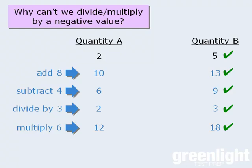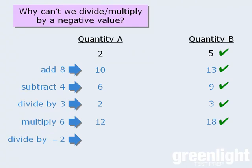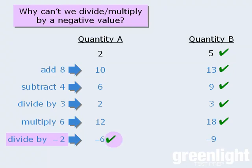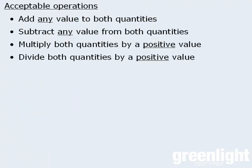However, notice what happens if we take our current quantities and divide both of them by a negative value. When we divide both quantities by negative 2, we get negative 6 and negative 9. And now it's the case that quantity A is greater than quantity B. This of course is a problem. Our original goal was to compare these two quantities, and when we performed any of the acceptable operations, the resulting values were consistent with the conclusion that quantity B is greater. However, when we divided both quantities by a negative value, quantity B was no longer greater. This problem will occur whenever we divide or multiply both quantities by a negative value. So we must ensure that we only multiply or divide the quantities by positive values.